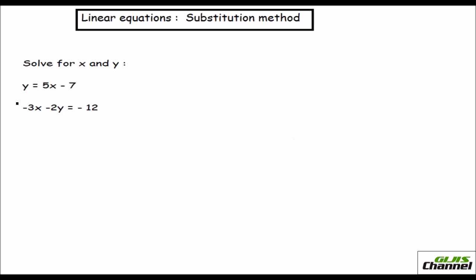In this equation, they have given you y is equal to 5x minus 7. That is your first equation, and the second equation says minus 3x minus 2y equals minus 12. In the first equation, they have said what y is, so you know one unknown variable in terms of the other — y is 5x minus 7.